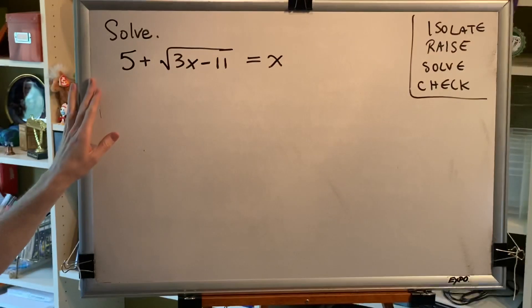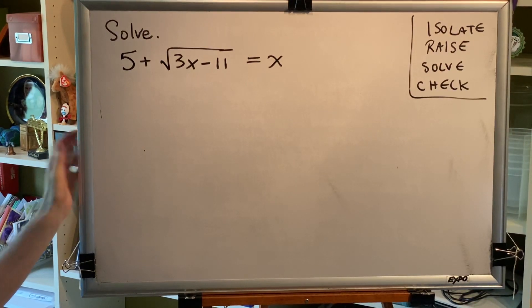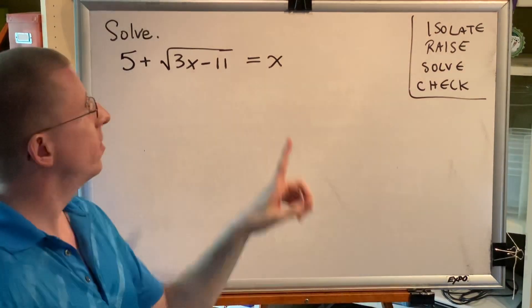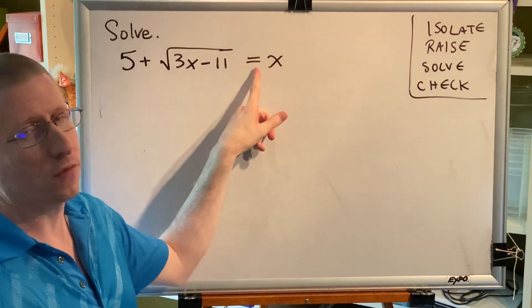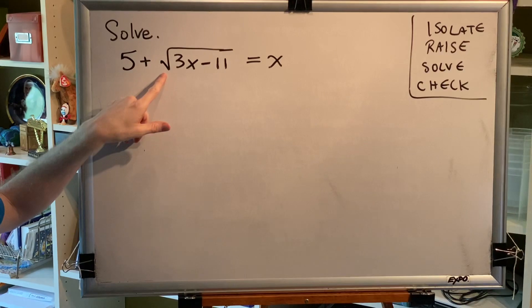5 plus the principal square root of the difference 3x minus 11 equals x. Once again, we notice this is an equation because of the equal sign, and it's a radical equation because at least one of its terms contains a radical.